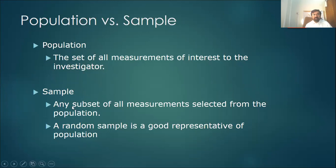Sample: whenever you take a fraction of this population, that is called a sample. That is a subset of all measurements selected from the population. A random sample is a good representative of the population. We will be discussing random sampling and systematic random sampling when we do the sampling technique.